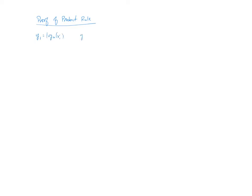To prove the product rule, I'm going to start with two separate logarithmic equations: y₁ equals log base a of x₁, and y₂ equals log base a of x₂ — the two are denoted differently by their subscripts. I'll take both of them and put them in their exponential form: a raised to the y₁ equals x₁, and a raised to the y₂ equals x₂. Being the product rule, I'll now take x₁ and multiply it by x₂, which means a raised to the y₁ times a raised to the y₂.